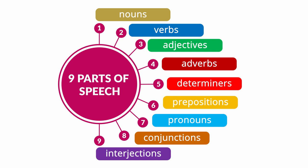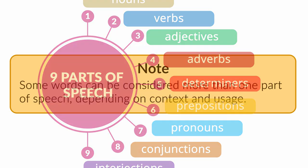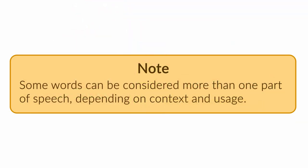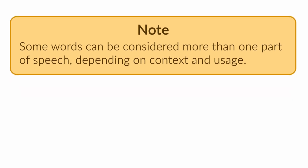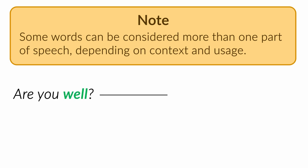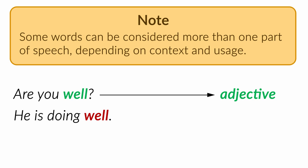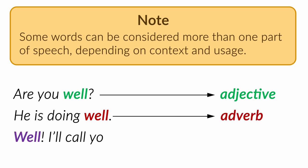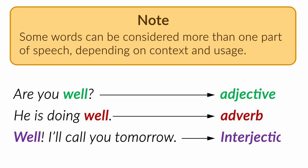In English, every sentence you write or speak includes words that fall into some of the nine parts of speech. Please note some words can be considered more than one part of speech depending on context and usage. Let's look at the word 'well' in sentences: 'Are you well?' — here 'well' serves as an adjective. 'He is doing well.' — in this sentence 'well' serves as an adverb. 'Well, I'll call you tomorrow.' — and in this sentence 'well' serves as an interjection.